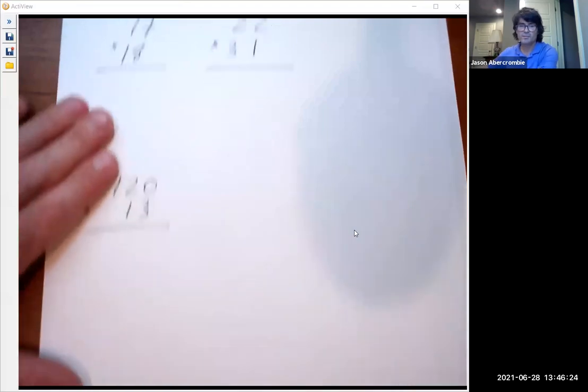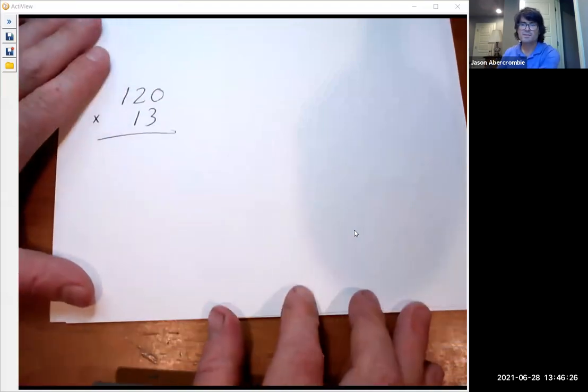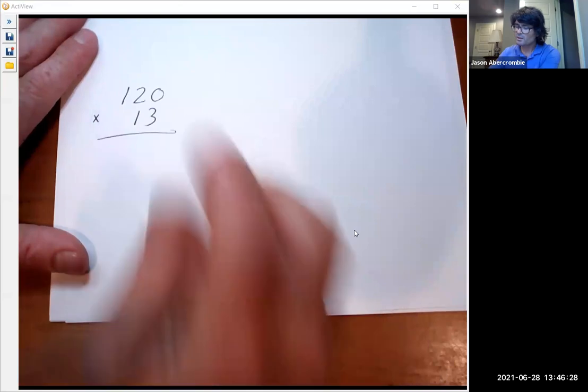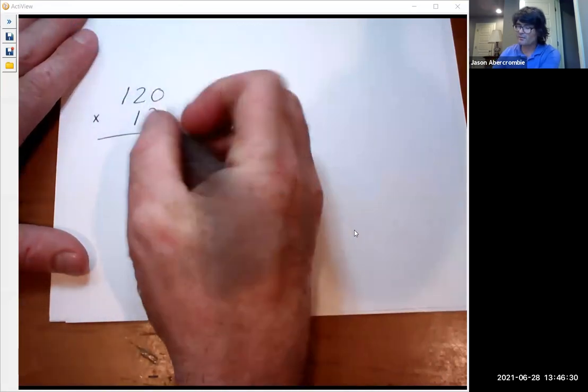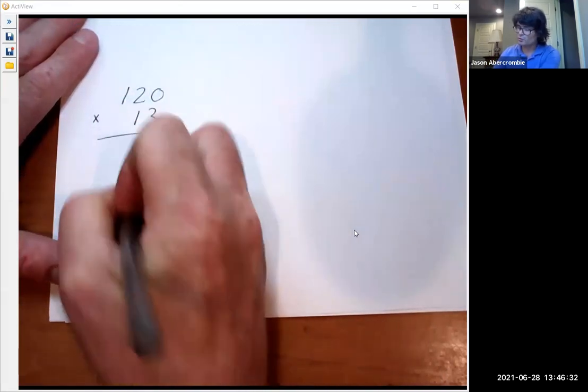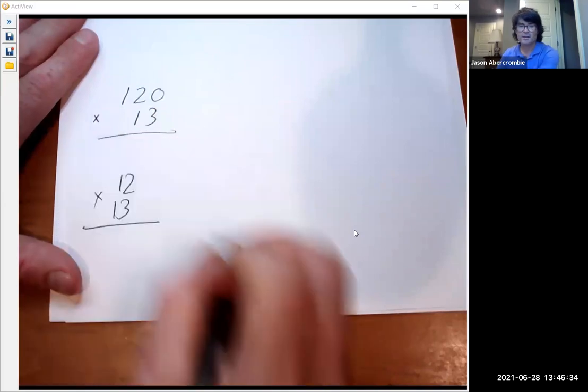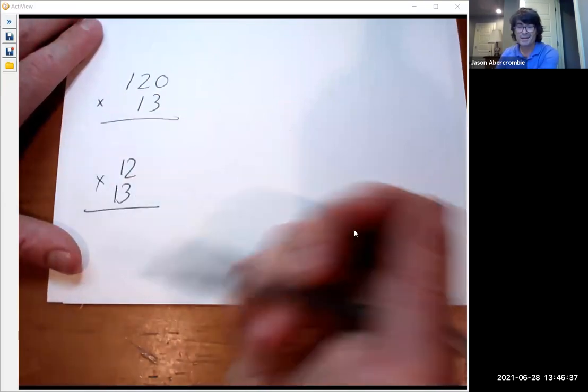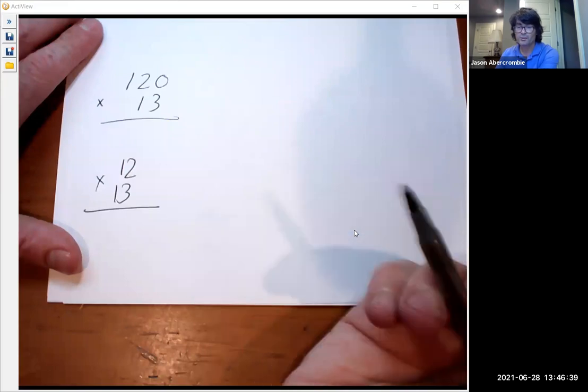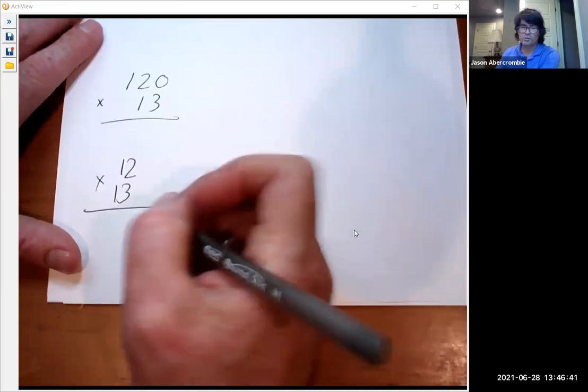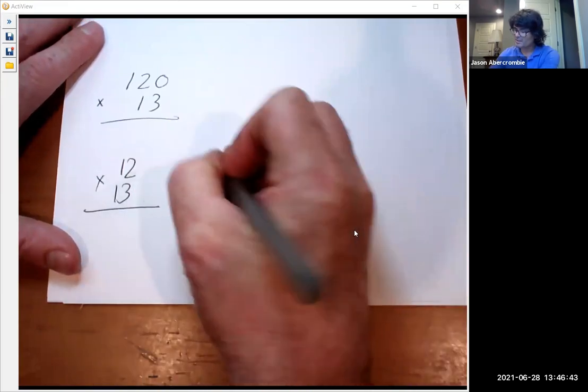Let's do one like this: 120 times 13. So first thing is I'm going to just take off the zero and do 12 times 13 like that. And if we take off the zero now we can add it back in later at the end to our answer. So 12 times 13, let's pretend